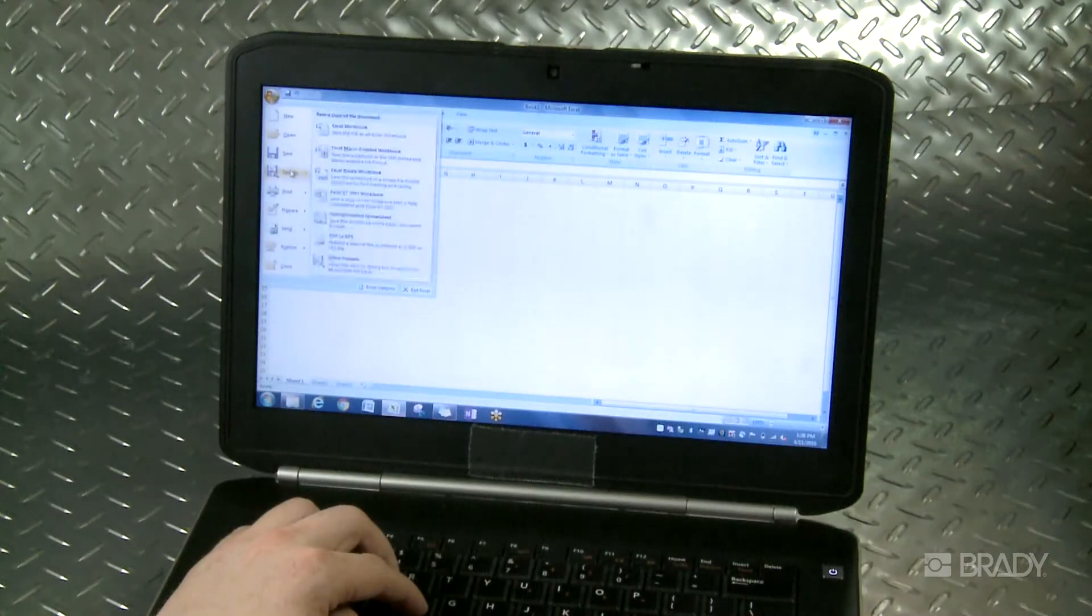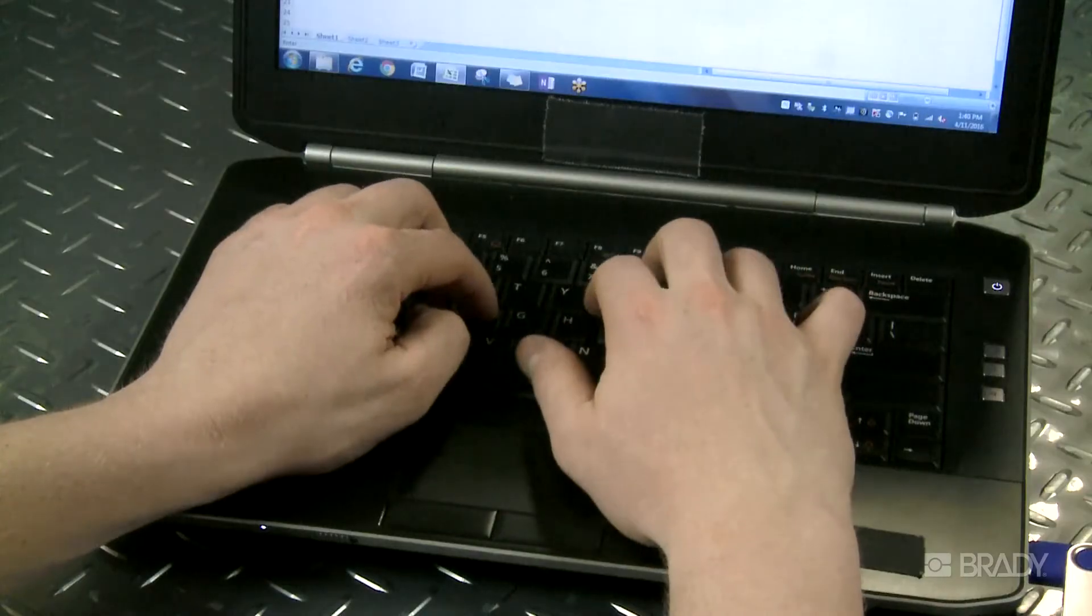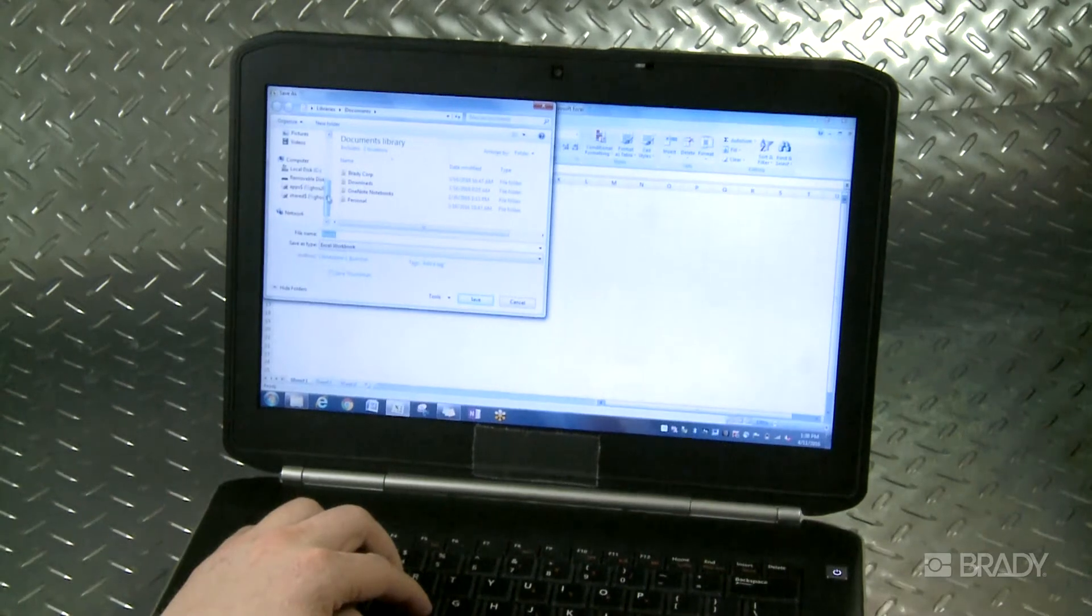First, save your list as a CSV file on your computer. Then save that file to a portable USB drive.